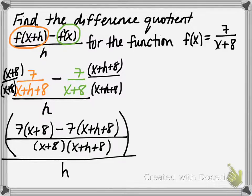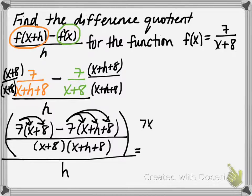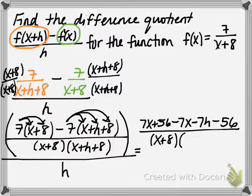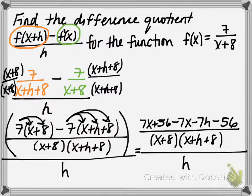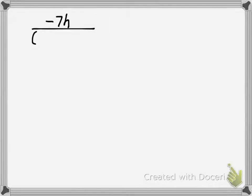Now I simplify the big numerator by distributing. I distribute the positive 7 and the negative 7 — being careful with signs. That gives us 7x plus 56 minus 7x minus 7h minus 56. All divided by the common denominator x plus 8 times x plus h plus 8. Simplifying: 7x minus 7x cancels, and 56 minus 56 cancels, leaving negative 7h on top.